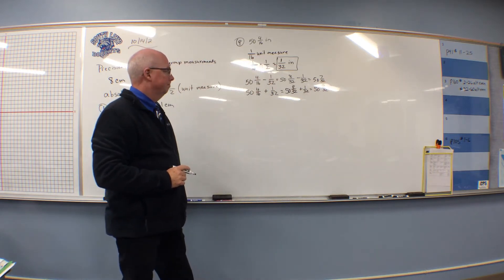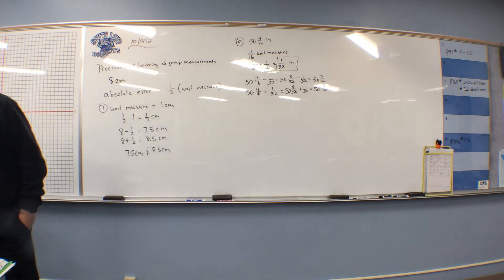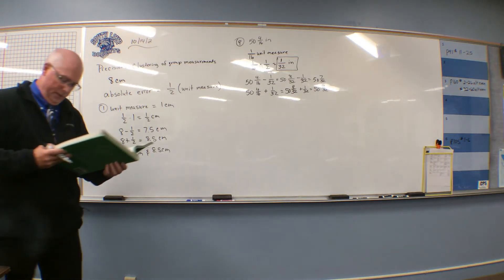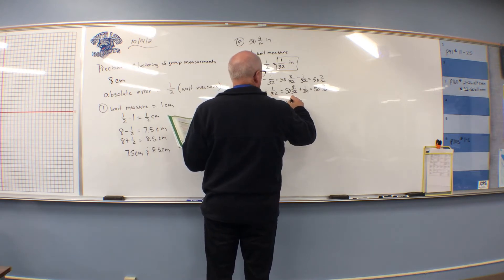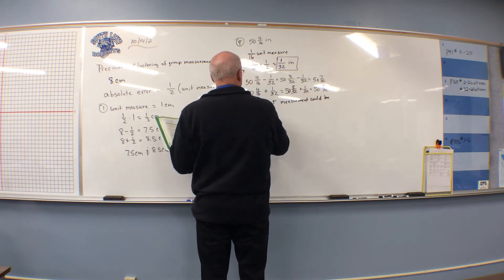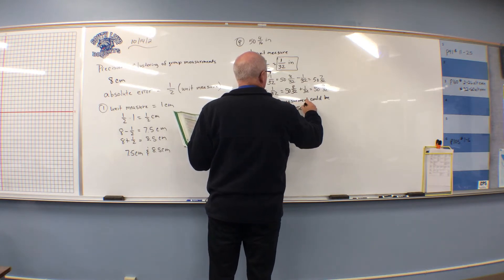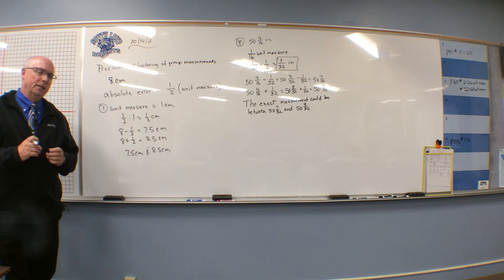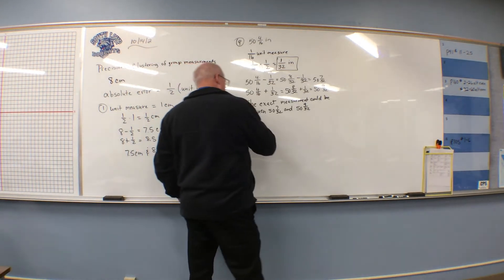So what is that telling you? The exact measurement could be between 50 and seven thirty-seconds and 50 and nine thirty-seconds. Whatever the measurement is, it's between those two values. We don't know exactly where it is, but we know it's between those — that's as close as we can come to it. It's kind of like a room for error. Exactly.